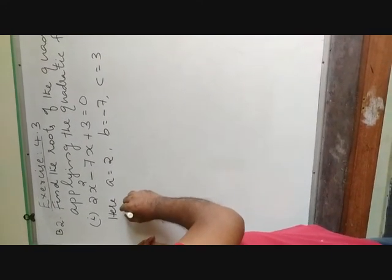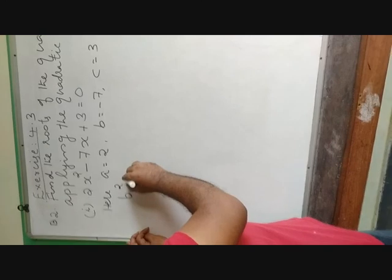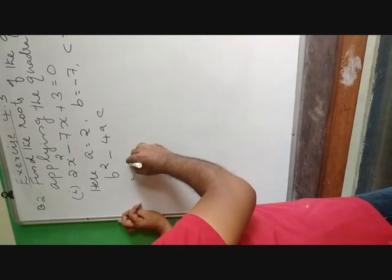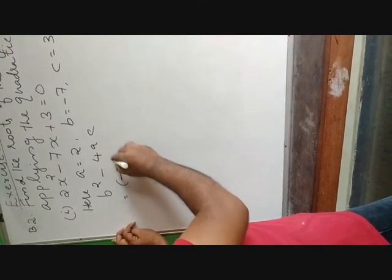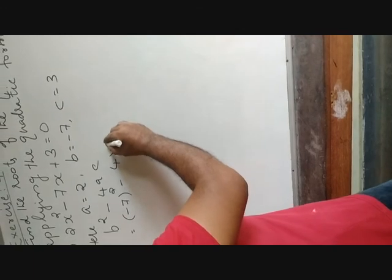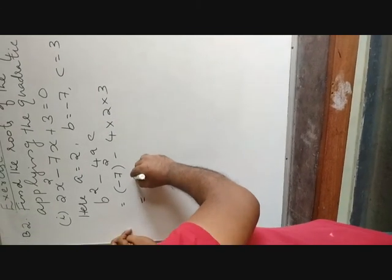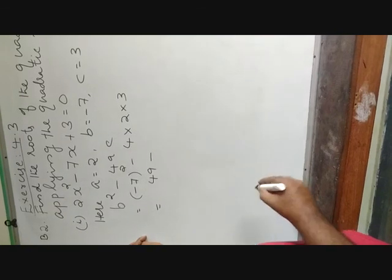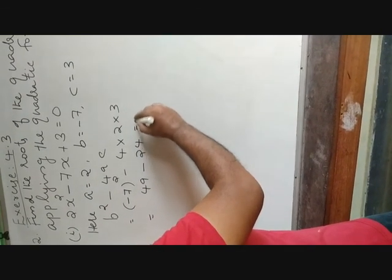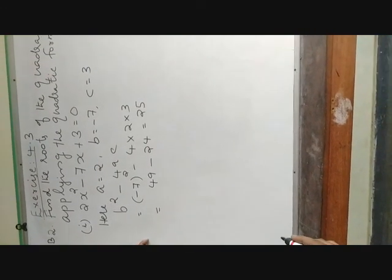For finding the answer, first we have to find out B squared minus 4AC — that is the discriminant of the equation. B squared minus 4AC is equal to minus 7 squared minus 4 into 2 into 3, which is 49 minus 24, equal to 25. So B squared minus 4AC is plus 25.